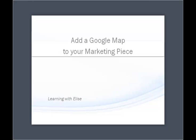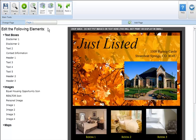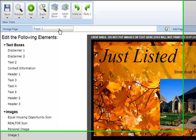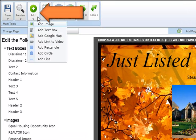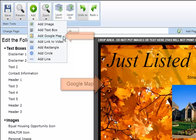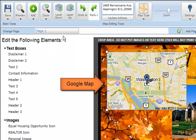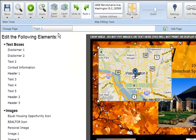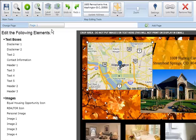Hello, this is Elise. Thanks for joining. In this tutorial, you'll learn how to add a Google map to your marketing piece. To add a Google map to your marketing piece, click on the Add button in the main tool section and select Add a Google Map.